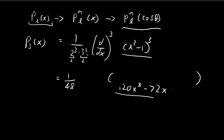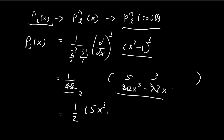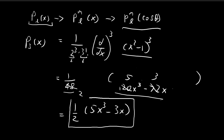We have this polynomial divided by 48. The coefficients and the denominator both have a common factor of 24, so dividing through gives 1/2(5x³ − 3x). This is P₃(x).